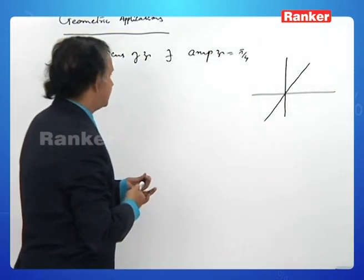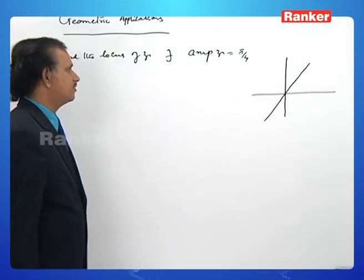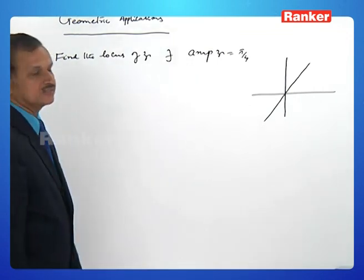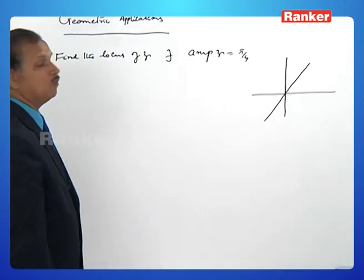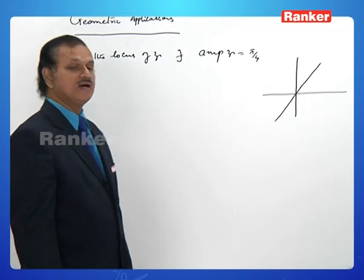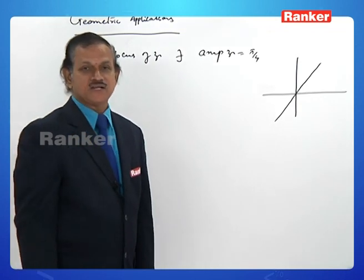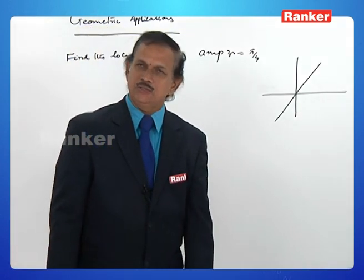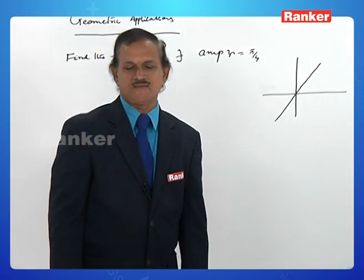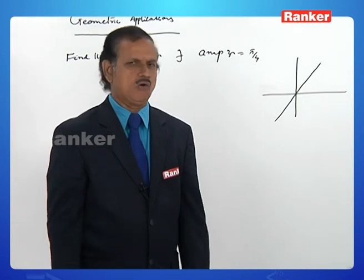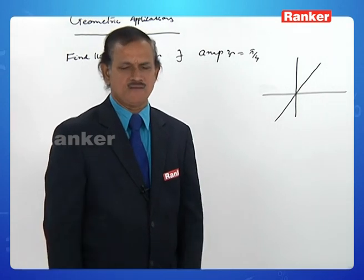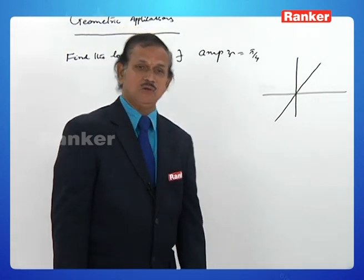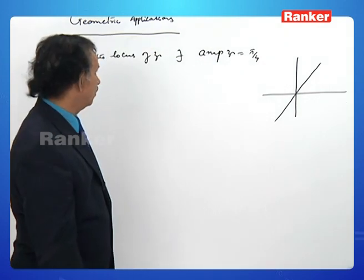The locus of z such that amplitude of z equals π/4 is the line x = y. Whenever different loci are asked, try to convert z in terms of x + iy or in modulus-amplitude form so that you will be able to identify the locus.